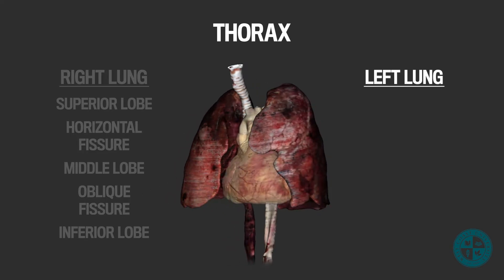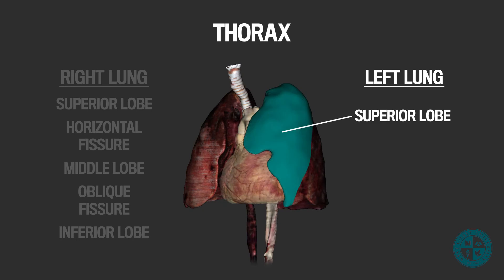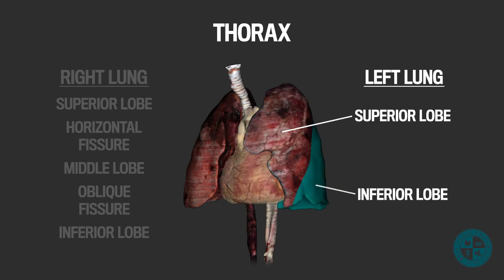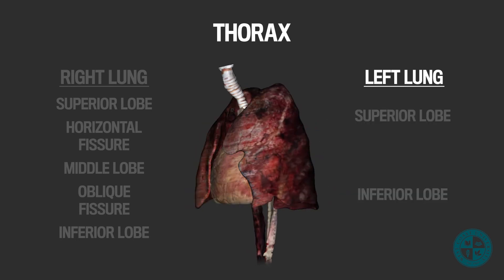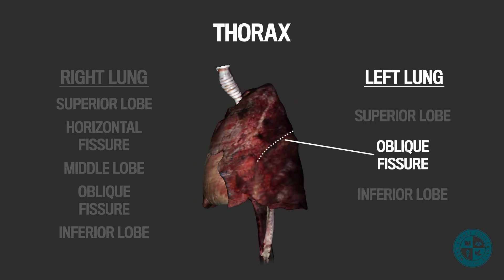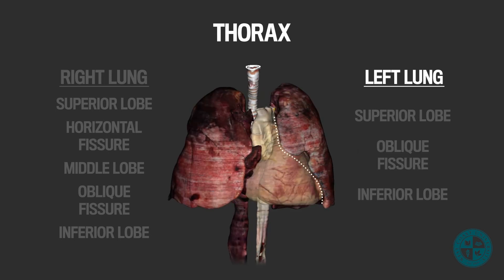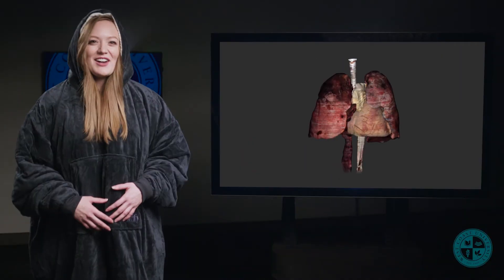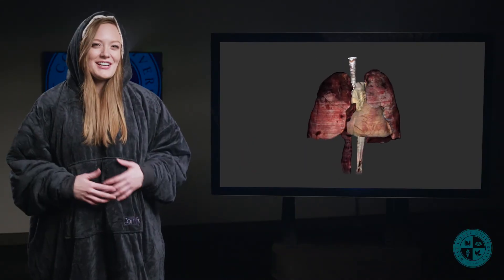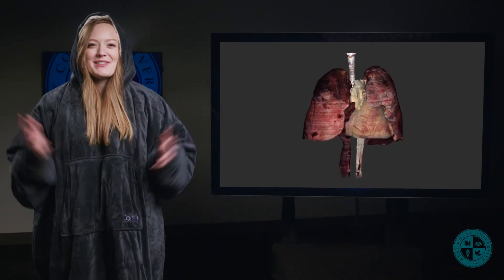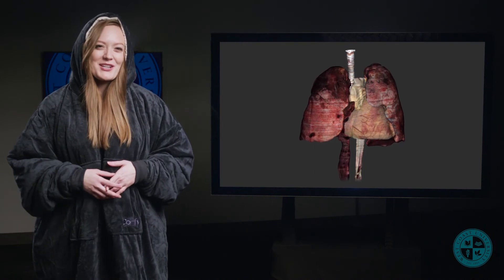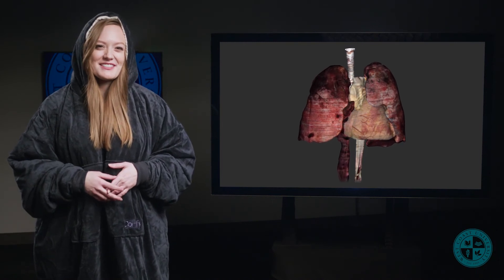The left lung has only two lobes, the superior lobe and the inferior lobe, which are separated by the oblique fissure. The reason why the left lung only has two lobes is because of its relationship with the heart. The heart and the left lung are cuddle buddies — they hang out all the time, and as a result, we can see an impression on the left lung, often referred to as the cardiac notch.